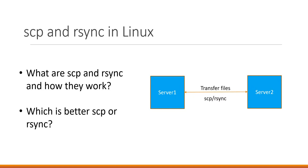In this video, we will discuss SCP and RSync in Linux. SCP means secure copy, and RSync means remote sync. Both SCP and RSync are used to transfer files between two machines. In the diagram, we have Server 1 and Server 2. We can upload files from Server 1 to Server 2 and also download files from Server 2 to Server 1. We will see in detail the SCP and RSync commands and the differences between them and their applications.